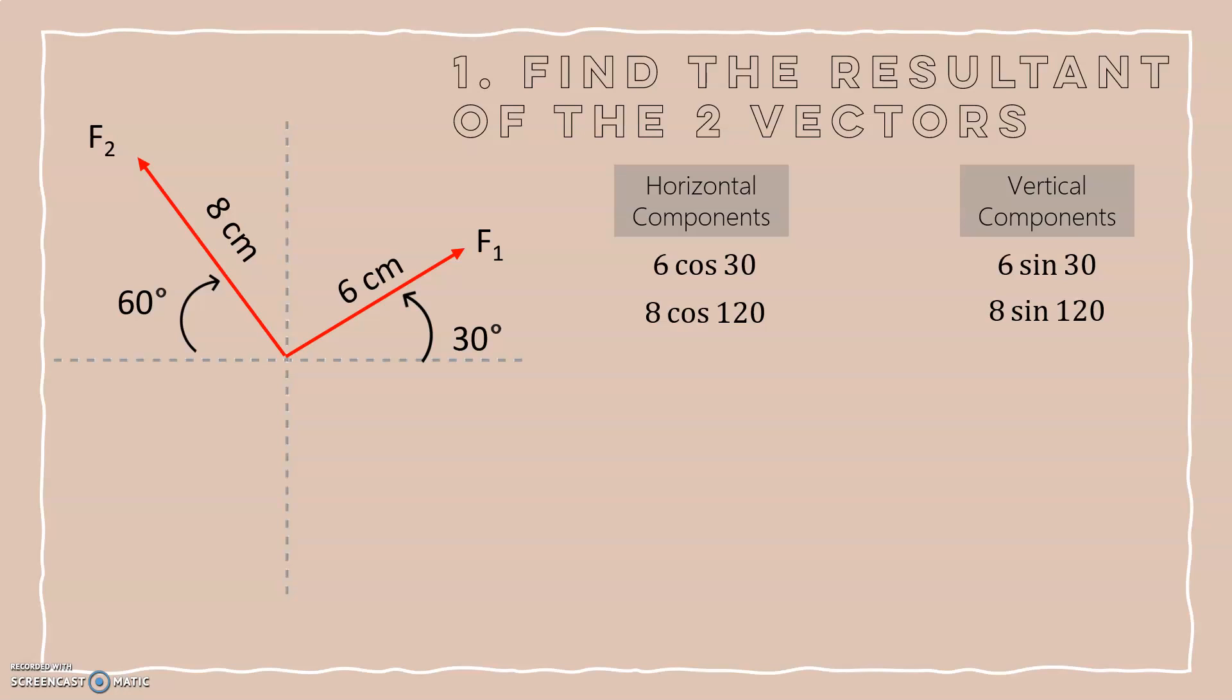The horizontal component of f2 would be 8 cosine of 120 degrees, and the vertical component of f2 would be 8 sine of 120 degrees.